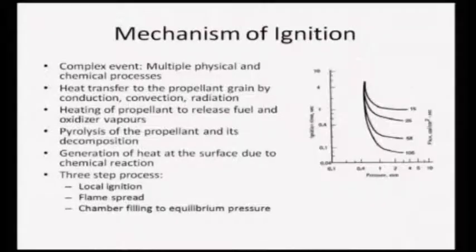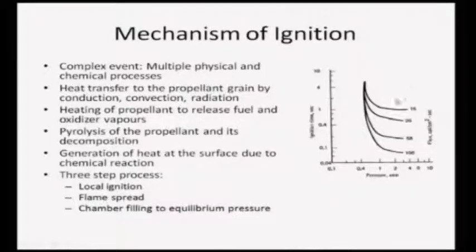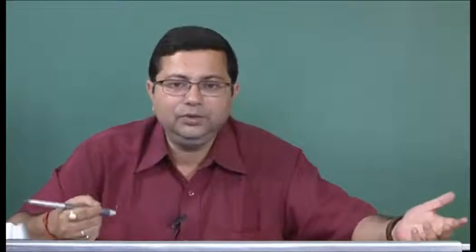The ignition process is complex, involving multiple physical and chemical processes: heat transfer to the propellant grain by conduction, convection, and radiation; heating of the propellant to release fuel and oxidizer vapor; pyrolysis of propellant and its decomposition; and generation of heat at the surface due to chemical reaction. Essentially it is a three-step process: local ignition, then frame spread, and finally the entire chamber is filled to equilibrium pressure. Ignition time depends on heat flux - higher heat flux gives less ignition time - and chamber pressure: higher pressure gives less ignition time.